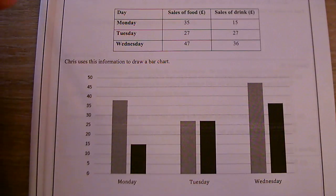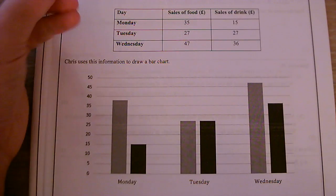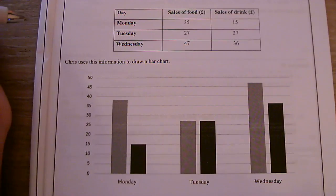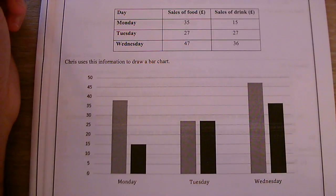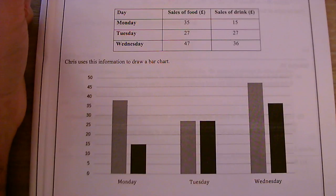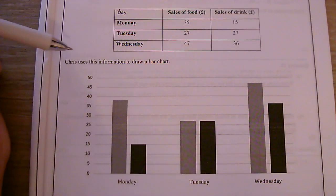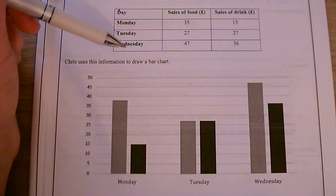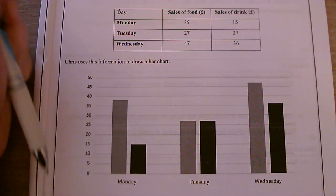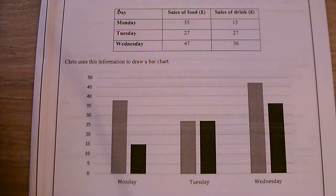Question 8. The table shows the sales of food and drink for three days at a small coffee shop. Chris uses this information to draw a bar chart and says write down three different mistakes that he has made.